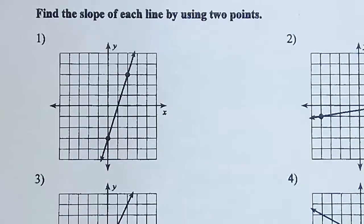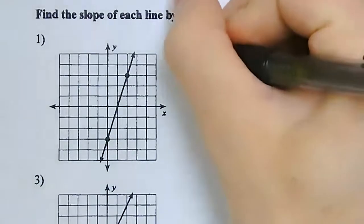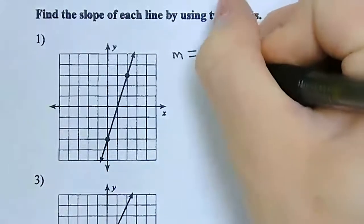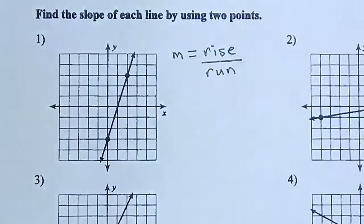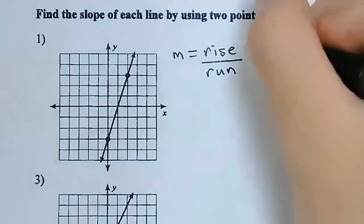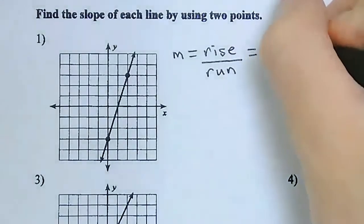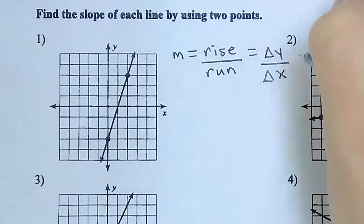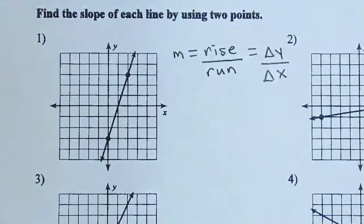Today we're finding the slope of each line by using two points. I want to take two points that are on the graph and figure out what the slope is. To do that, I can do this two ways. The first way is by using rise over run. We know that m stands for slope, with rise on top and run on the bottom, because we're always finding the change in y on top versus the change in x on the bottom. Rise is how far up or down you go, and run is how far left or right you go.